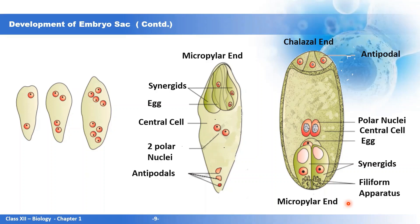You will also come across the term monosporic development. As the name indicates, it refers to the development from a single megaspore — specifically, the formation of the embryo sac from a single megaspore is known as monosporic development.